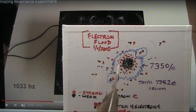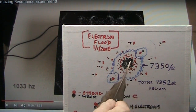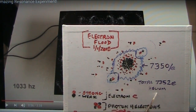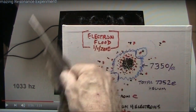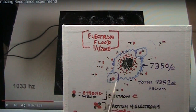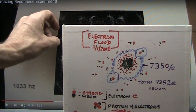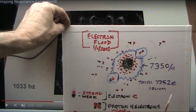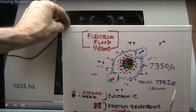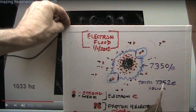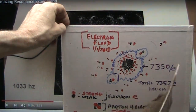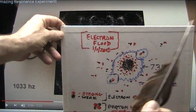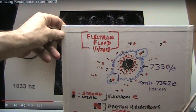At some point I said hydrogen when I meant to say helium — it's somewhere in there. I noticed I made a mistake, so if you see me say hydrogen, that's helium. It's 7,350 electrons. That was my mistake.